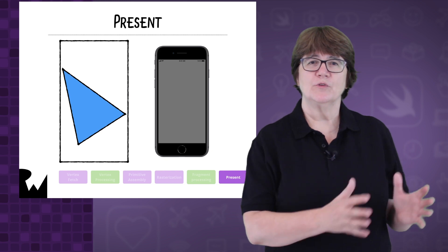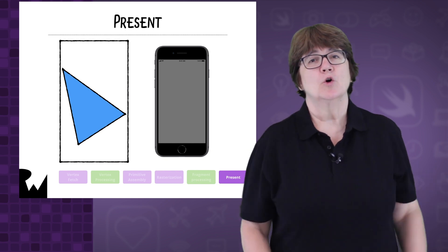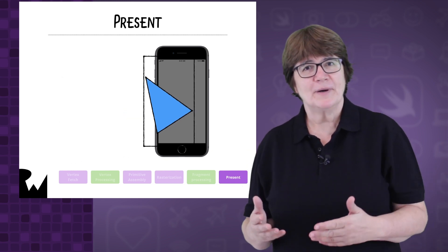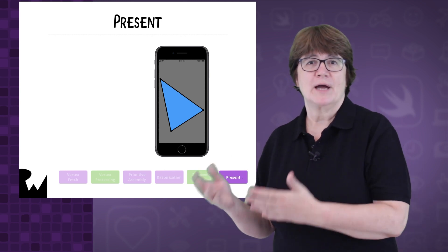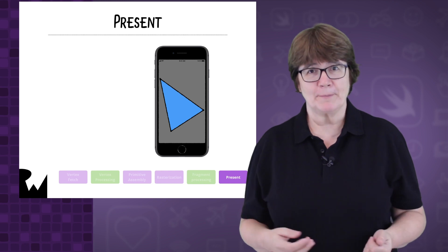All these fragments are written to a special memory location called the frame buffer. The frame buffer is what's finally presented to the screen. In the next video, we'll look at how we write the programmable stages of the pipeline, the vertex and fragment functions.